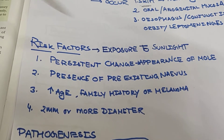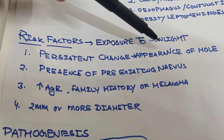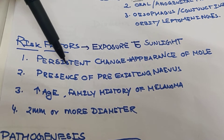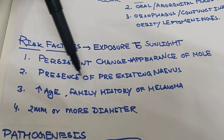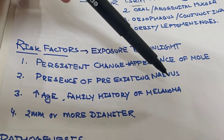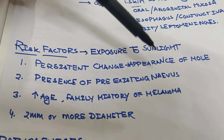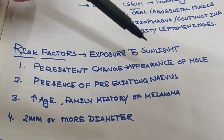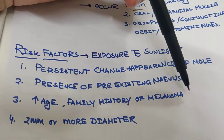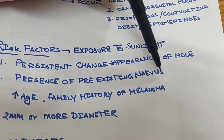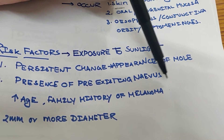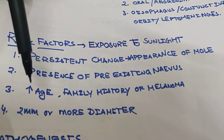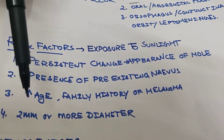The risk factors include exposure to sunlight, that is UV radiation. The risk increases whenever there is a persistent change in the appearance of a mole and the presence of pre-existing nevi. Nevi are birthmarks, and there are many types — based on whether they are present on the epidermis or at the junction of the epidermis and dermis.